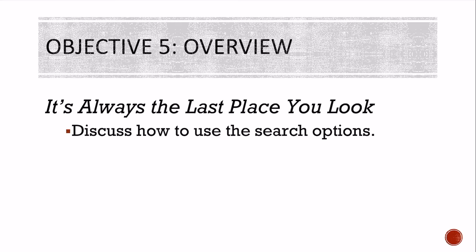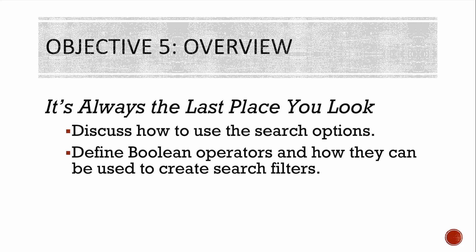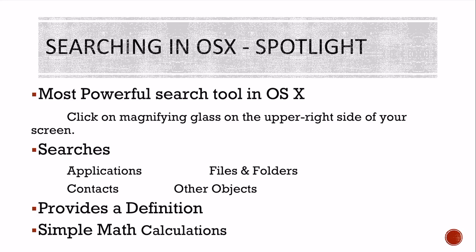Objective five: it's always the last place you look. We're going to look at how to use search options and define Boolean operators and how they can be used to create search files. The most powerful search tool in OS X is called Spotlight. When you're using a Mac, you'll click on the magnifying glass in the upper right side of your screen. It'll search for applications, contacts, other objects, files, folders, and so forth. You can also type in information like a word definition or do simple math calculations.